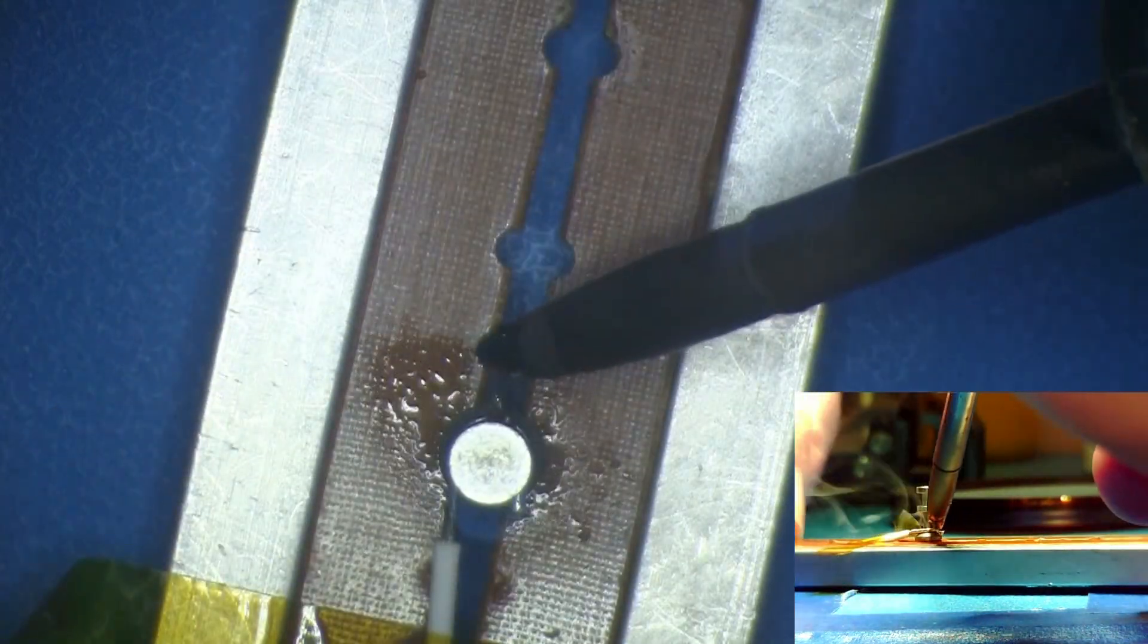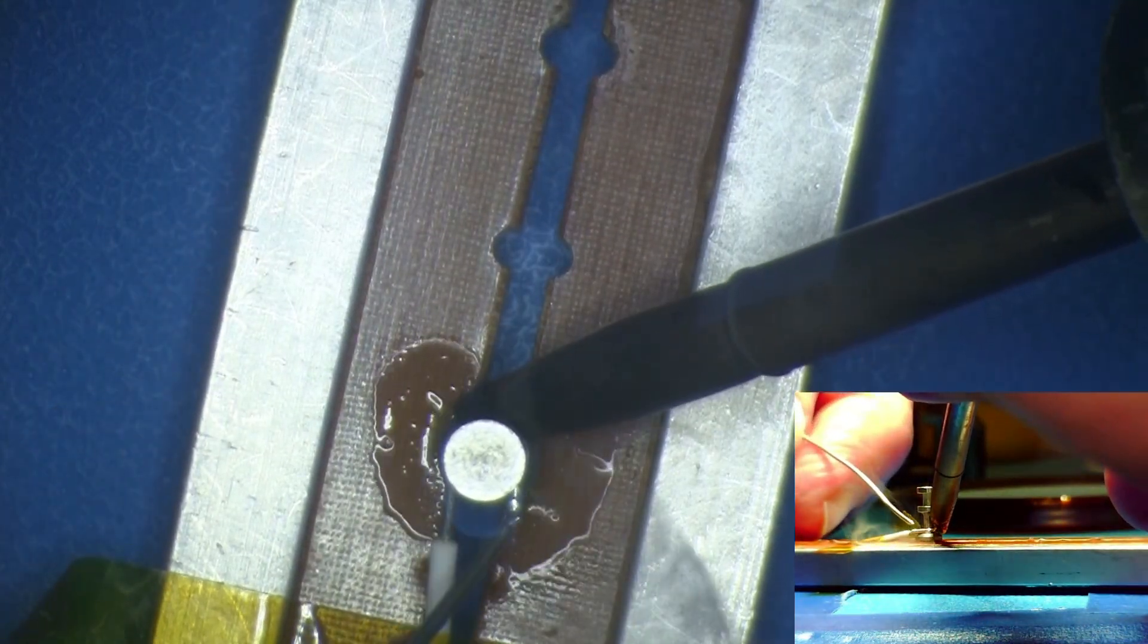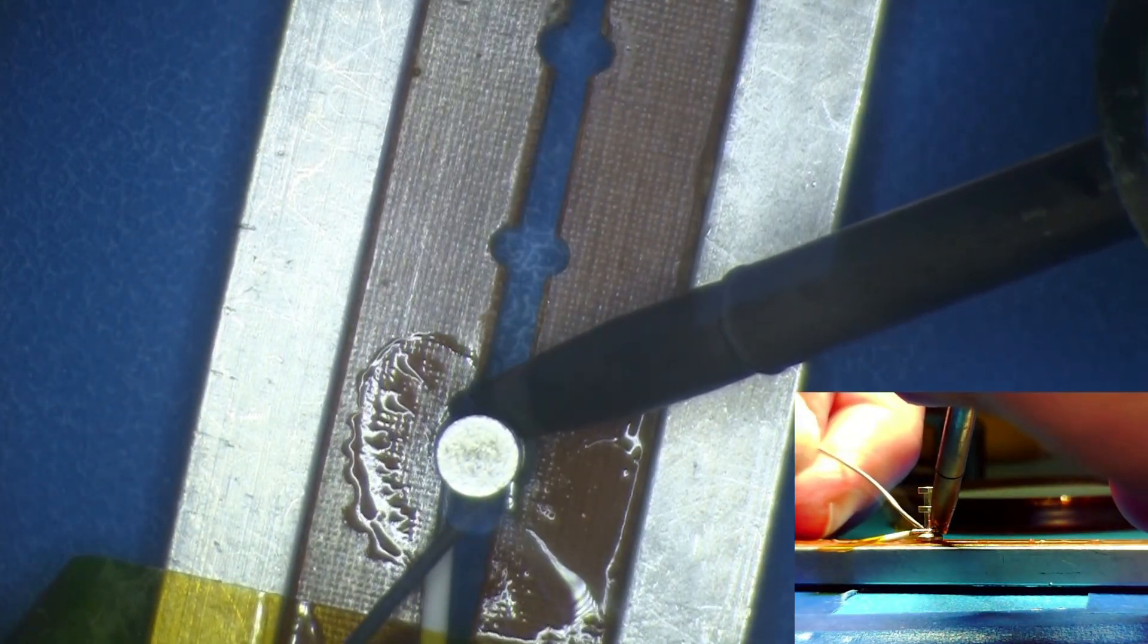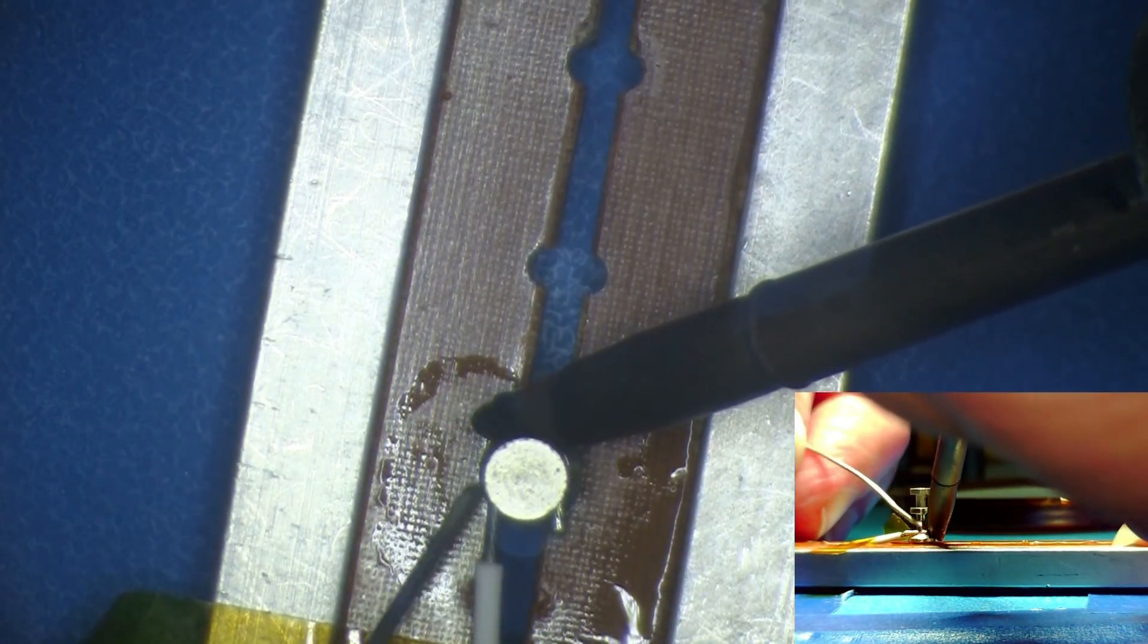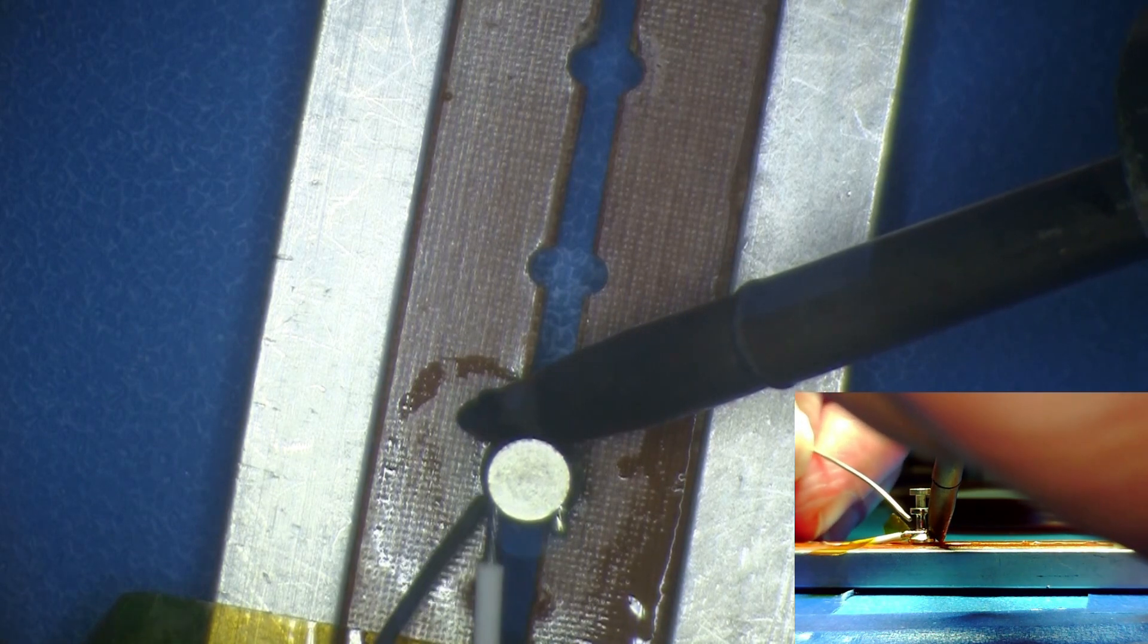Create a heat bridge between the iron tip, the wire, and the terminal. Apply solder to the opposite side of the termination so the solder can flow around the wire and terminal toward the soldering iron.